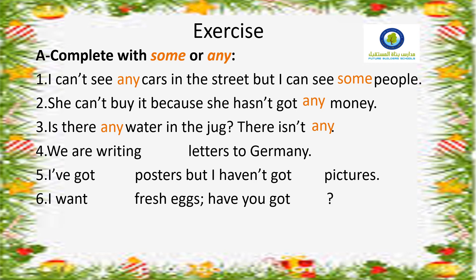Number four: we are writing some letters to Germany. This is an affirmative sentence — we are writing, not we are not writing — so we use some. Number five: I've got some posters, but I haven't got any pictures. I've got is affirmative, so some; I haven't got is negative, so any. Number six: I want some fresh eggs. Have you got any? I want is affirmative, so some; have you got is a question, so any. By this exercise, we finish grammar worksheet 2 and the last quantifiers we talked about: some and any.